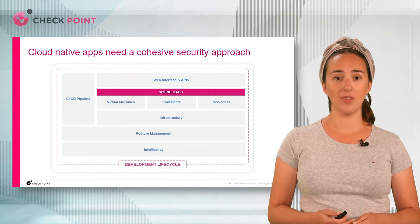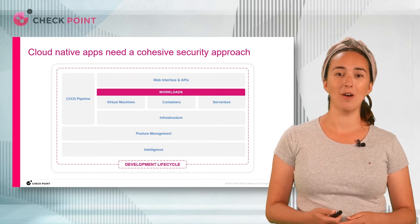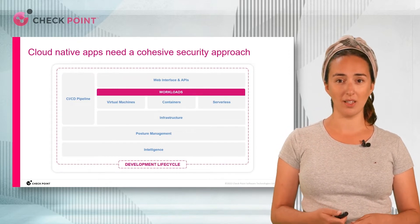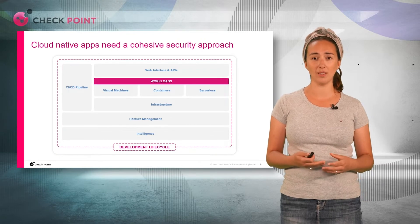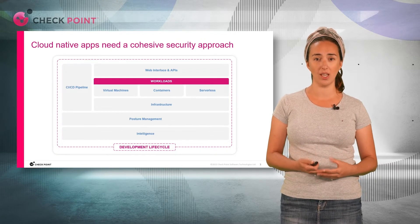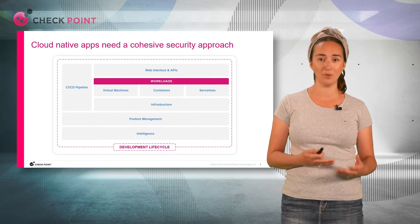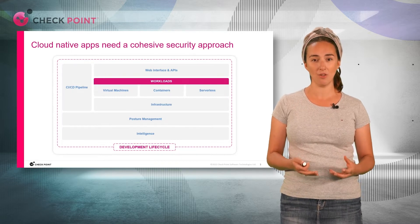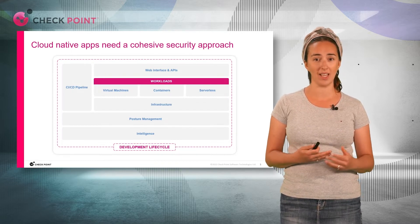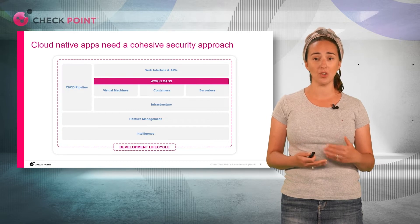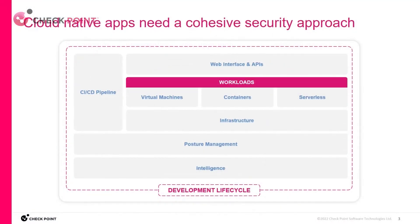The dotted line that you've just seen appear around the diagram represents the software development lifecycle, and that's another key vector where customers need continuous security. It's not enough to deploy a shift left tool for DevOps. Enterprises need to know that their code repository is continuously scanned and that there's also security scanning during runtime. So we've laid out what unified security looks like, but now let's try to understand the gap between this level of coverage and the challenges that security teams are still facing.